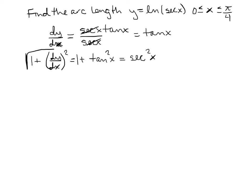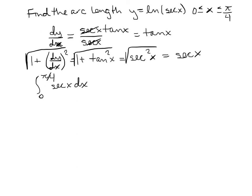Taking the square root of secant squared gives secant. So we integrate from 0 to pi over 4 the square root of 1 plus (dy/dx) squared, which ended up being secant. The integral of secant requires a table formula: the integral of secant is the natural log of the absolute value of secant x plus tangent x, evaluated from 0 to pi over 4.